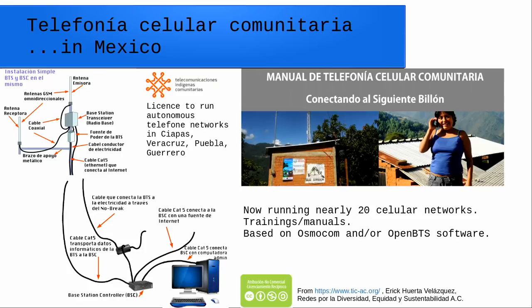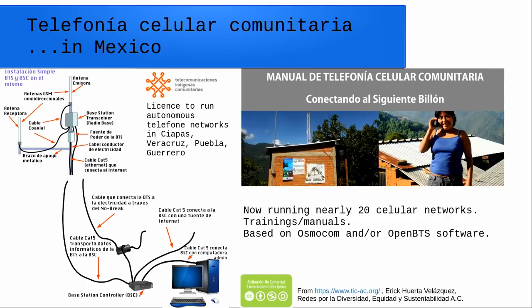Today, the association Telecomunicaciones Indígenas Comunitarias has a license to run autonomous telephone networks in different parts of Mexico — Chiapas, Veracruz, and Puebla — and they are already running nearly 20 cellular networks. They also do a lot of trainings and write manuals, so if you want to learn how to run your own GSM networks, you can have a look at their site. These are only two examples of projects where SDR facilitated low-budget communication.